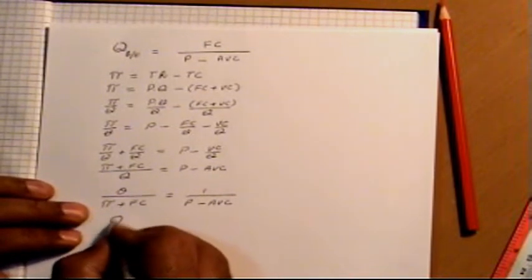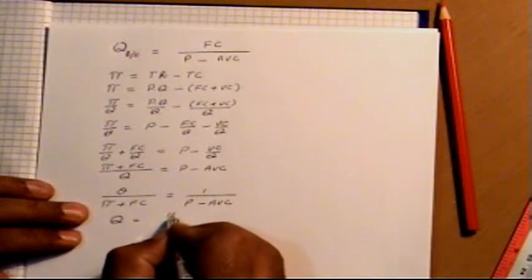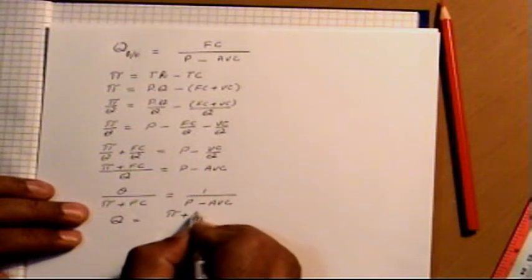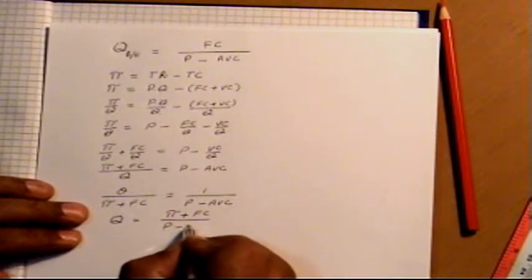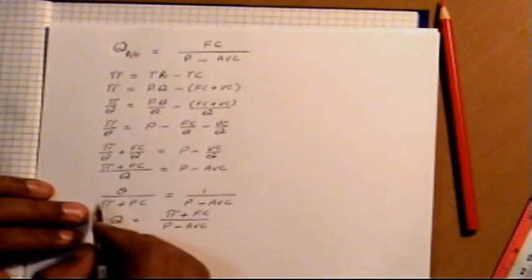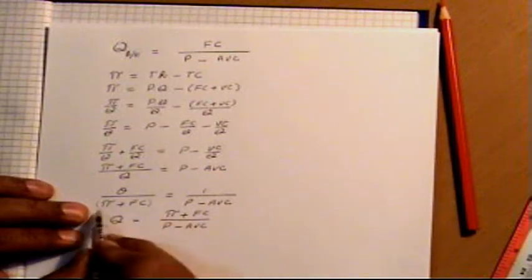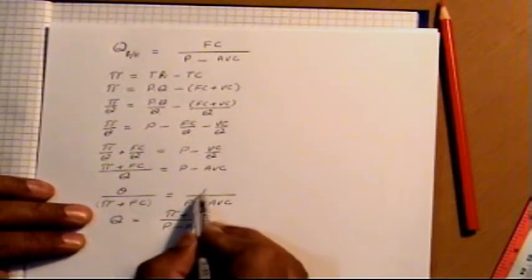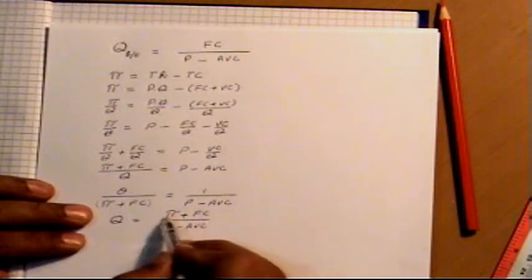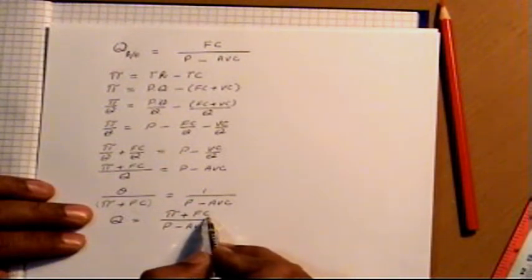By solving for q, this entire component when we shift it will be placed here in the numerator.